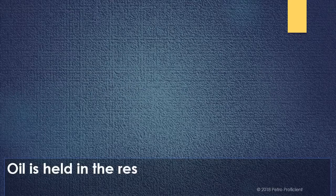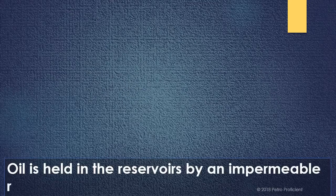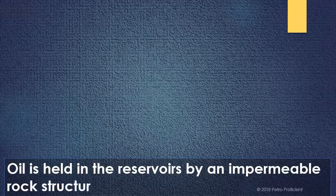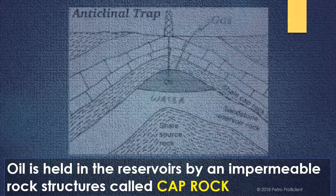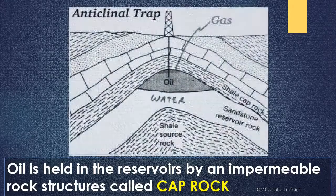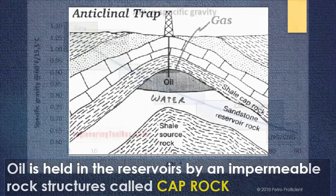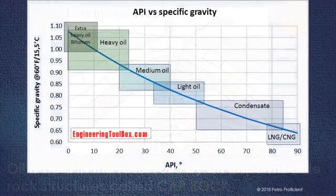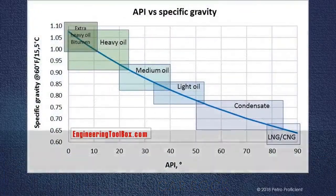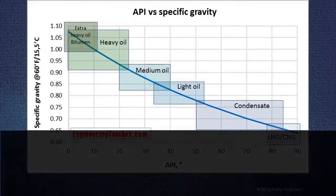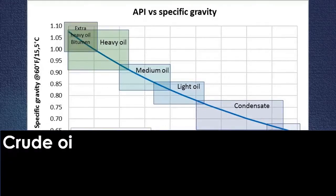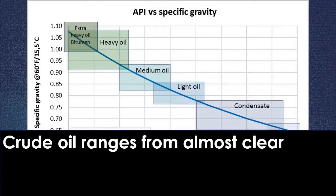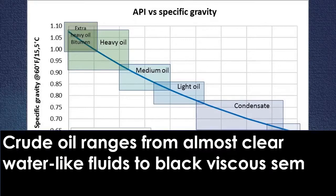Oil is held in the reservoirs by impermeable rock structures called cap rock. Crude oil ranges from almost clear, water-like fluids to black, viscous semi-solids.